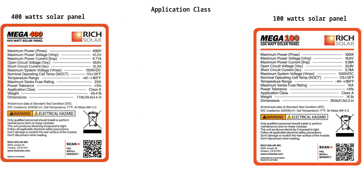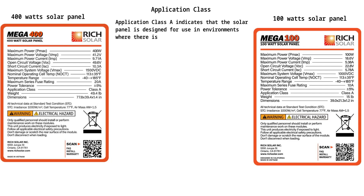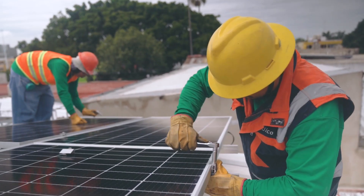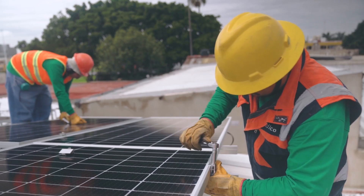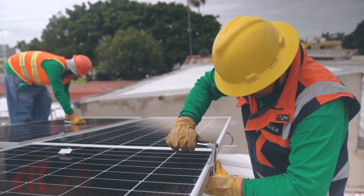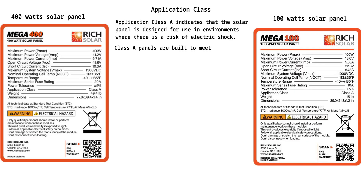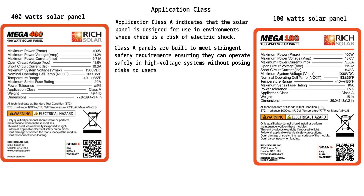10. Application Class A indicates that the solar panel is designed for use in environments where there is a risk of electric shock, including systems with high-voltage levels such as residential, commercial, and utility-scale installations. Its role in the solar system is safety assurance. Class A panels are built to meet stringent safety requirements, ensuring they can operate safely in high-voltage systems without posing risks to users or the environment.